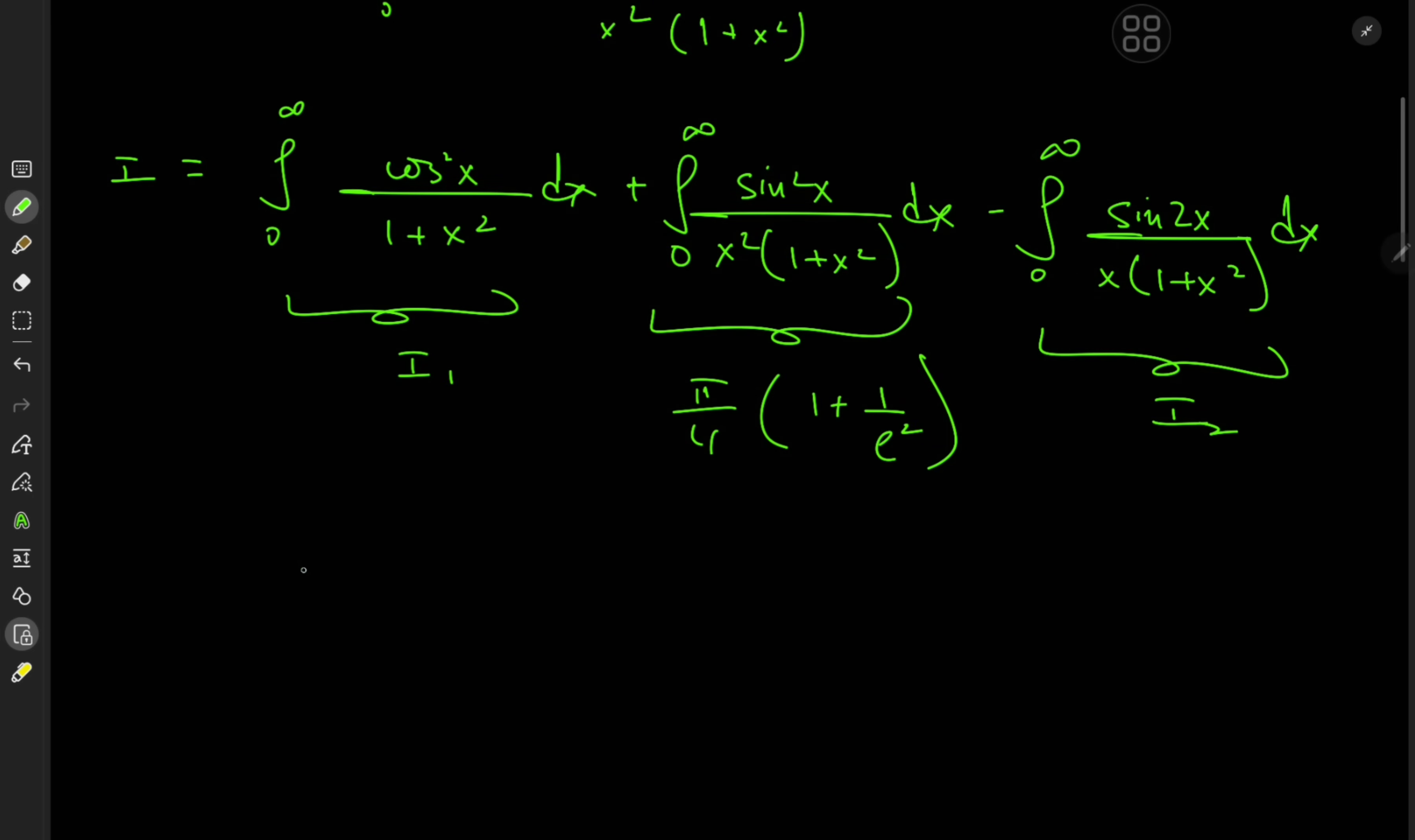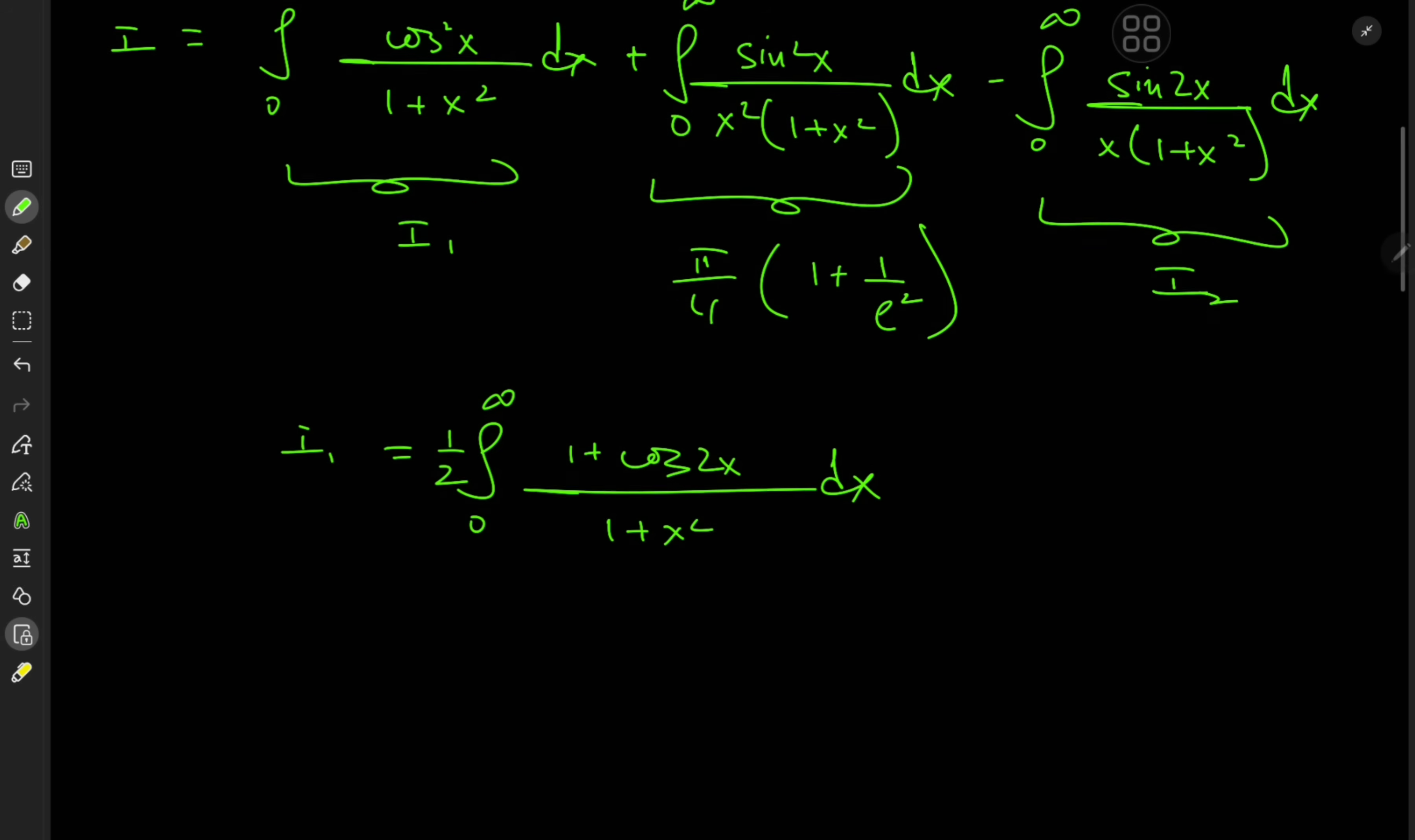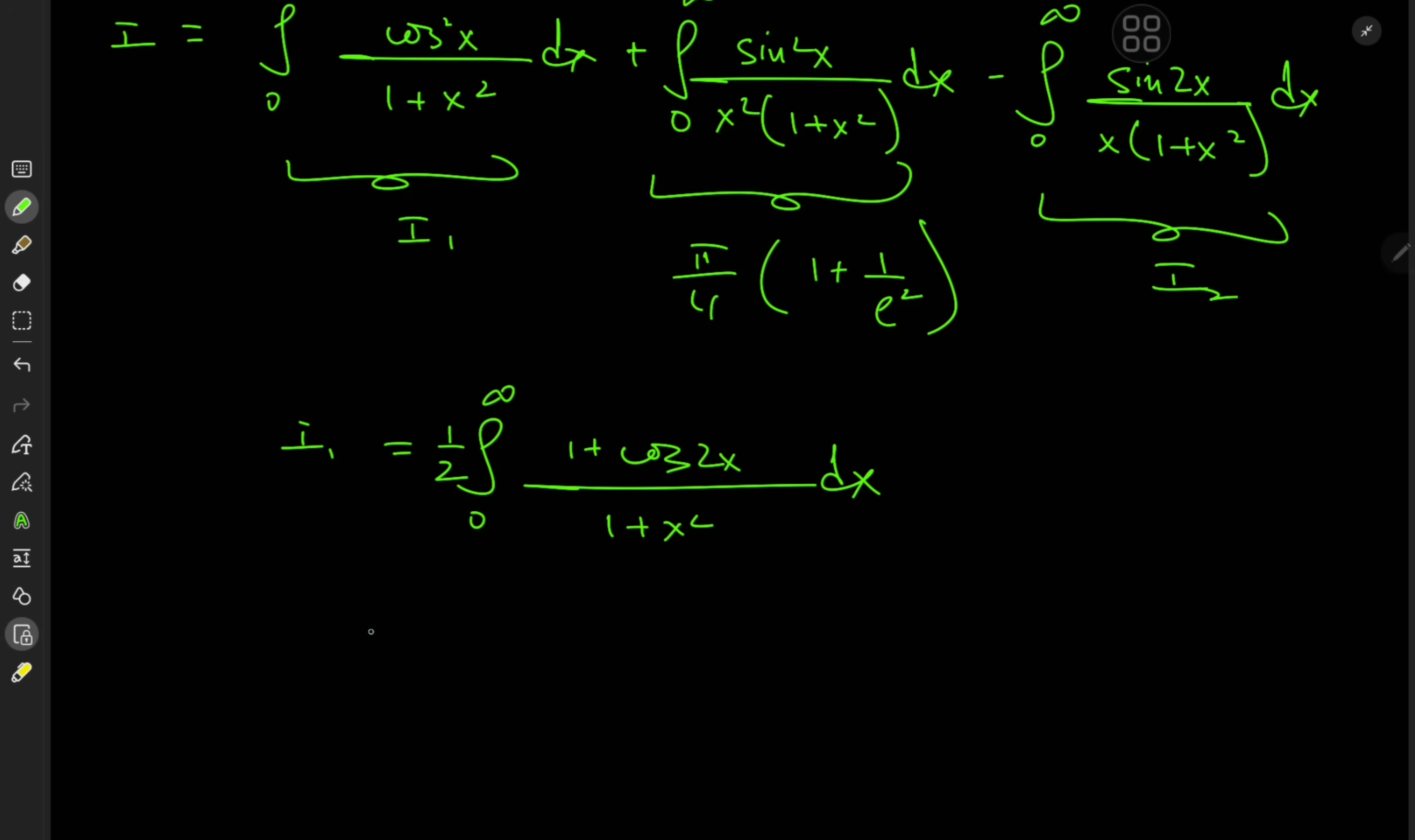So for i sub 1 we have the integral from 0 to infinity and cosine squared x is up top. There's a way to expand cosine squared using the double angle formula for the cosine function so that's exactly what we'll do. We have 1 half 1 plus cosine 2x over 1 plus x squared dx. Okay cool. So again I'll just invoke the linearity of the integration operator and split this thing up so that we have 1 half integral 0 to infinity dx over 1 plus x squared plus 1 half times the integral from 0 to infinity cosine 2x over 1 plus x squared dx.